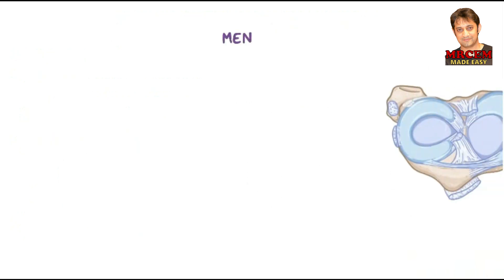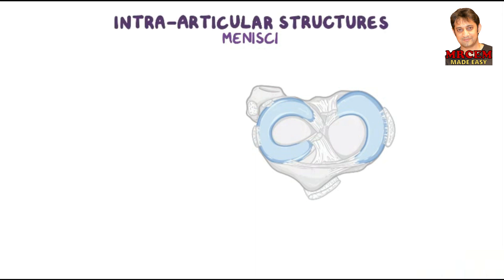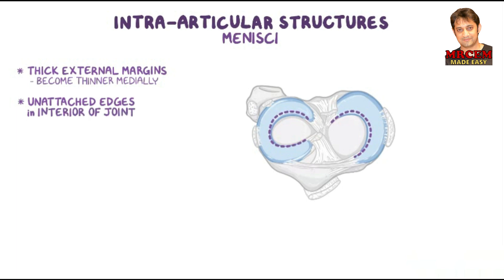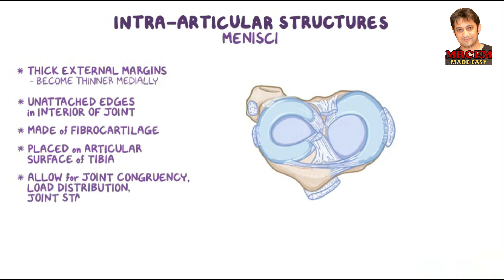The two menisci of the knee joint are small, C-shaped discs found within the synovial cavity that are considered intra-articular. The menisci have thick external margins which become thinner toward the interior, with unattached edges within the joint. Made of fibrocartilage and placed on the articular surface of the tibia, they function to allow for joint congruency, load distribution, and joint stability.